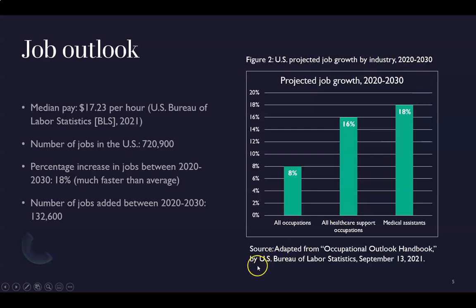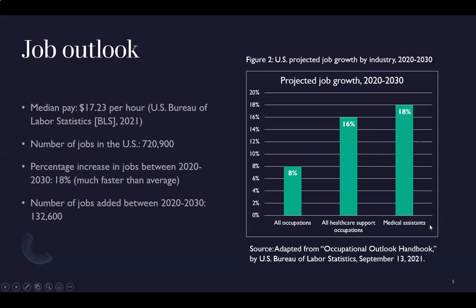At the bottom of that slide is a source line that reads: 'source adapted from Occupational Outlook Handbook by US Bureau of Labor Statistics, September 13, 2021.' The phrase 'adapted from' indicates this graph was not copied and pasted from the site. The data and numbers came from that source, and whoever created the PowerPoint built their own graph using that data — that's what the 'adapted from' line indicates.